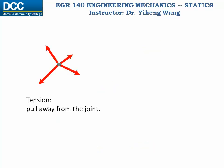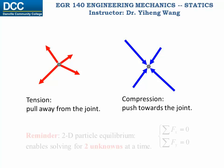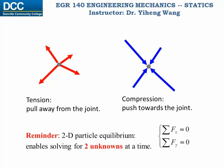As demonstrated earlier, if the forces in the members are tensile, then the forces acting on the pin pull away from the pin. On the contrary, if the forces in the members are compressive, then the forces acting on the pin push towards the pin. This is the base for the method of joints that we will discuss in another video. Remember, for a planar simple truss, we apply 2D particle equilibrium to each pin, and that enables us to solve for two unknowns at one time.